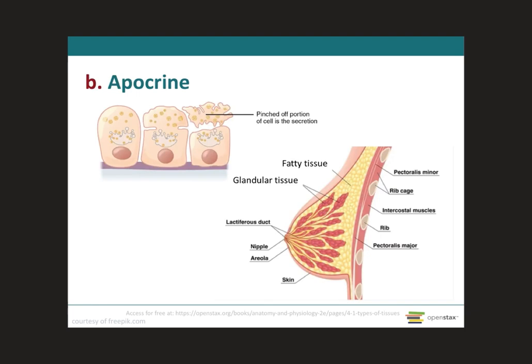Next, we have the apocrine cells, which accumulate the secretory products on the apical part of the cell — the top part. Then what happens is there's a pinching off: the membrane gets squeezed and the secretory products are released with part of the cytoplasm of the cell. Because the nucleus remains, the cell is able to regenerate the portion that got removed. The cell does not die, but it's different from merocrine secretion where only secretory vesicles are released through exocytosis. An example of this is the secretion of milk, fats, and mammary glands.